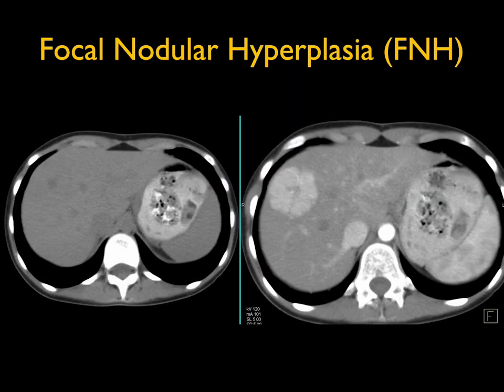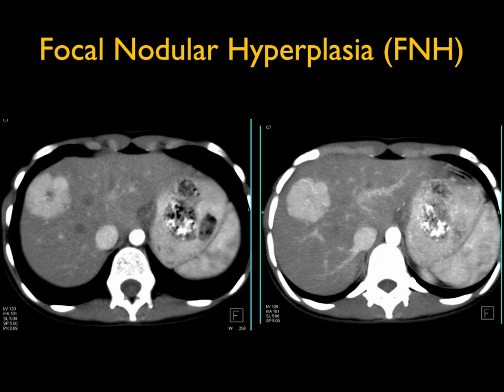Case 8: the liver looks pretty normal on non-contrast. On the arterial phase there is a vascular lesion about five centimeters with a central scar. Notably, the lesion is vascular but not as vascular as the aorta — it is only as vascular as the IVC. When I see a mass that is vascular like the IVC I'm always thinking about focal nodular hyperplasia. Hepatomas and hepatic adenomas tend to be more vascular, appearing more like the aorta.